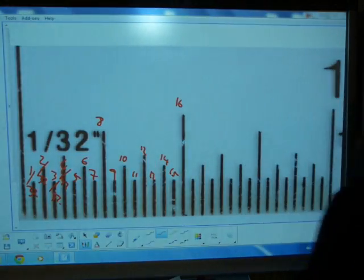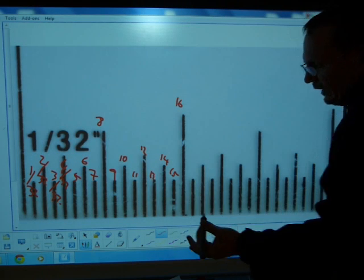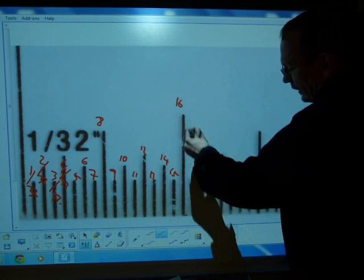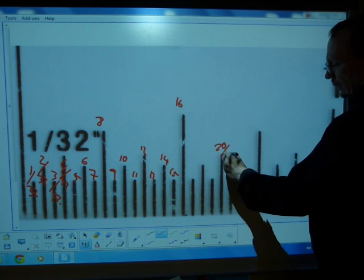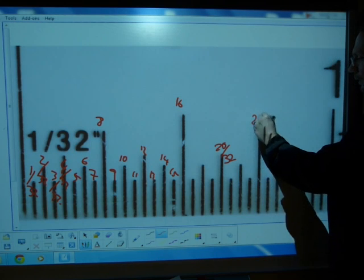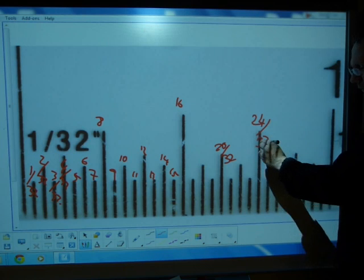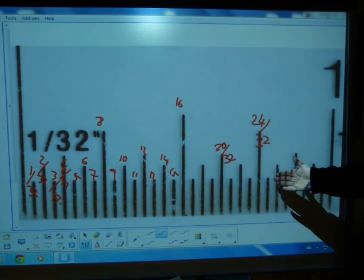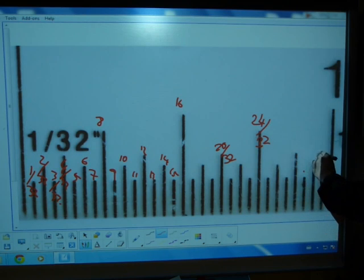I'm going to write it from this side here. Every line is 1/32nd of an inch: 17, 18, 19, 20/32nds, 21, 22, 23, 24/32nds, 25, 26, 27, 28, 29, 30...